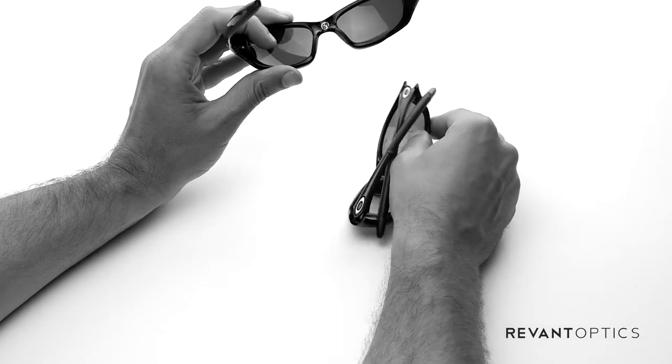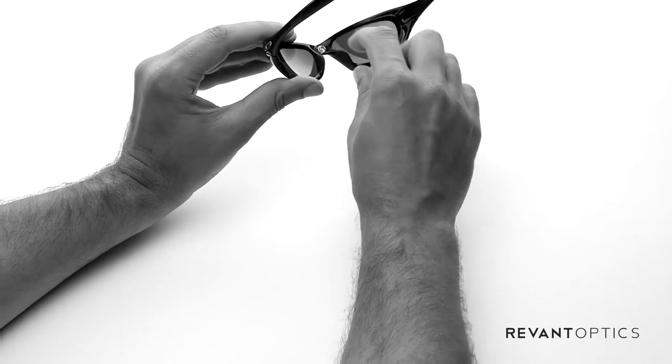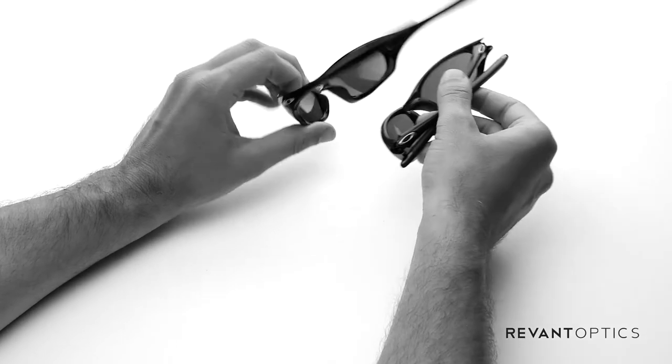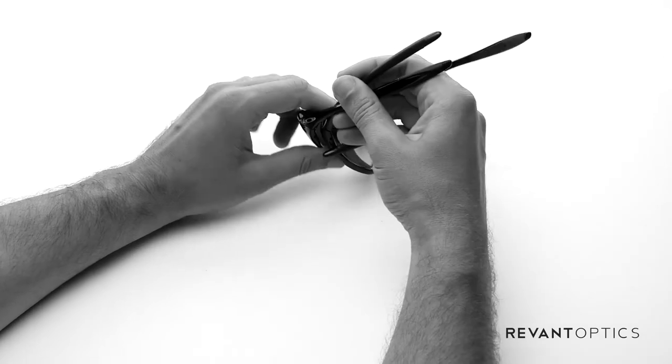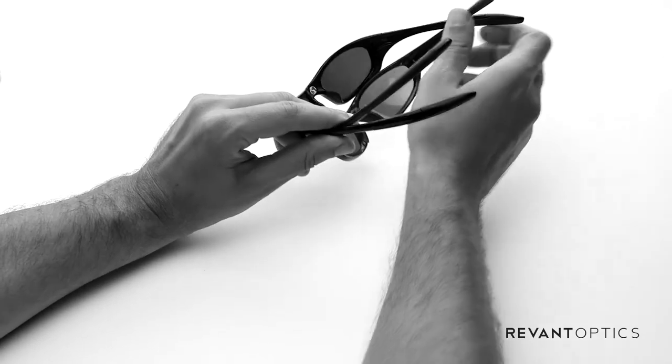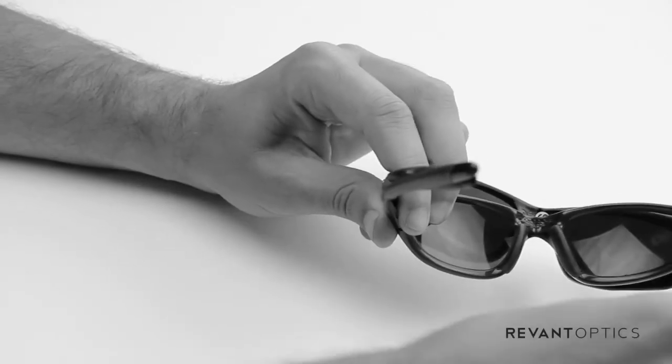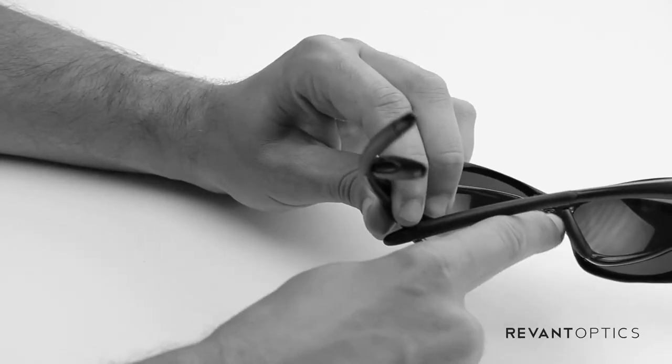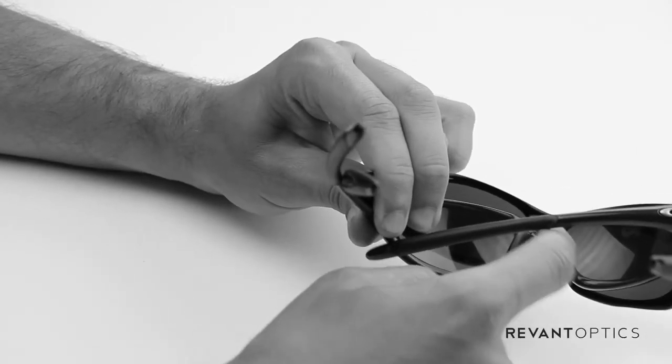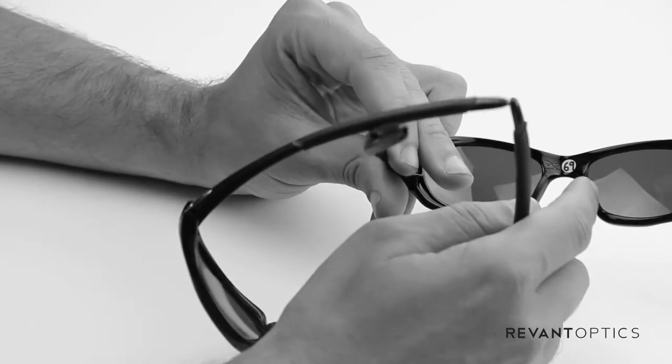And then the nose pads here, again the rubber pieces here are narrower, where on the 2000 version they're a lot longer. These ones pretty much go the entire height of the frame where these ones are shorter.